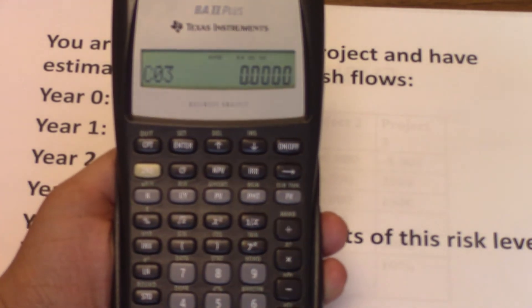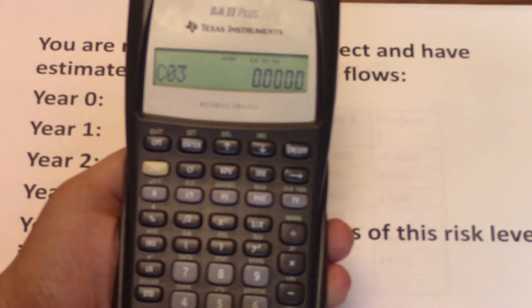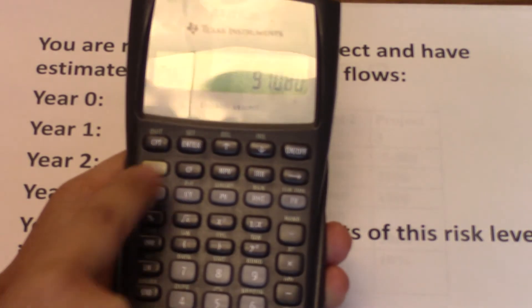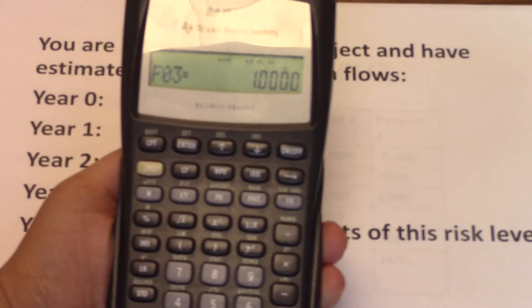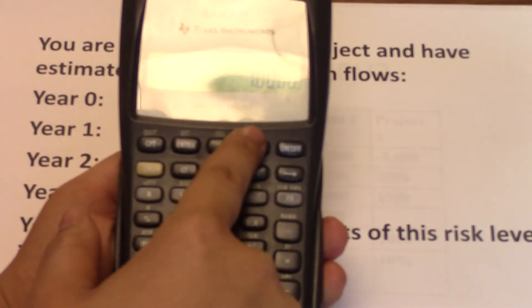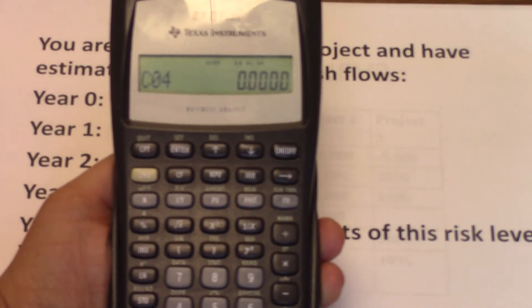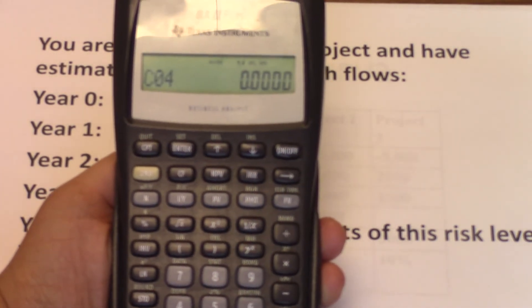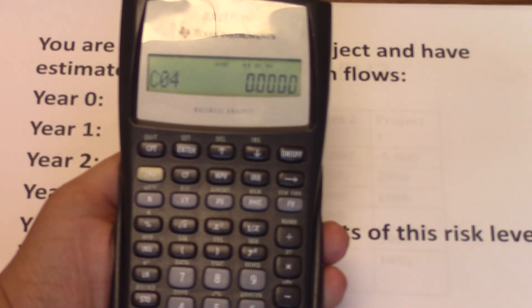And then cash flow year three is $91,080. So $91,080. Then enter, down arrow. If you do the down arrow again, you are taken to CF04. We don't have any cash flow year four. Therefore, we are done.